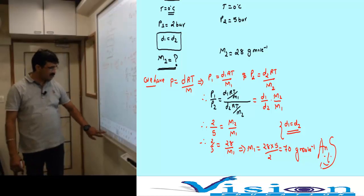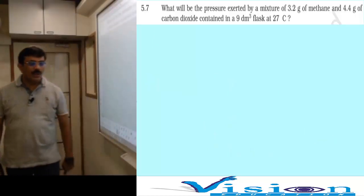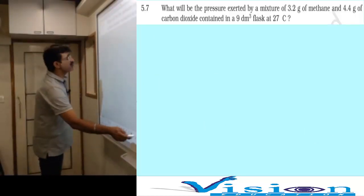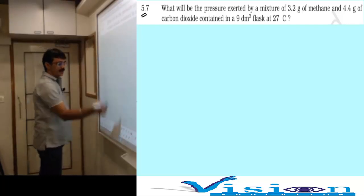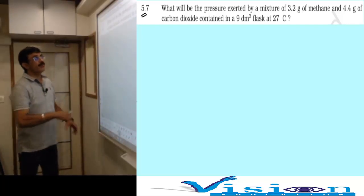Now p1 is 2 bar, p2 is 5 bar. We have the condition d1 equals d2, so this simplifies to 2 by 5 equals m2 by m1. Therefore m1 equals 28 into 5 divided by 2, which gives 70 gram per mole.